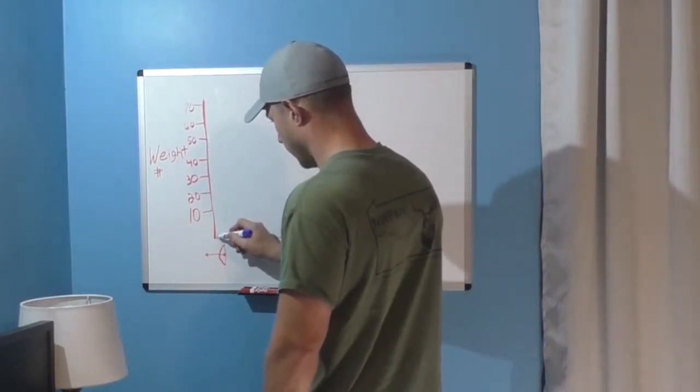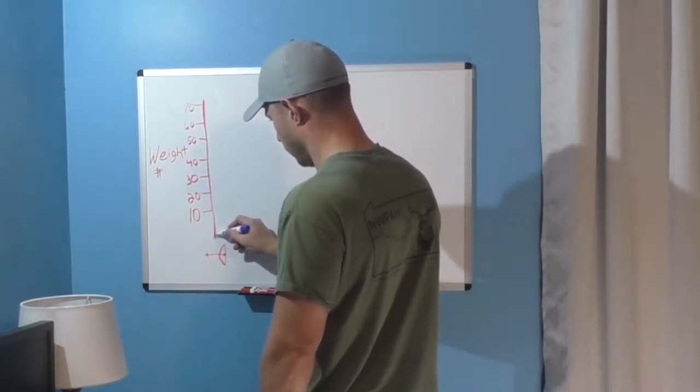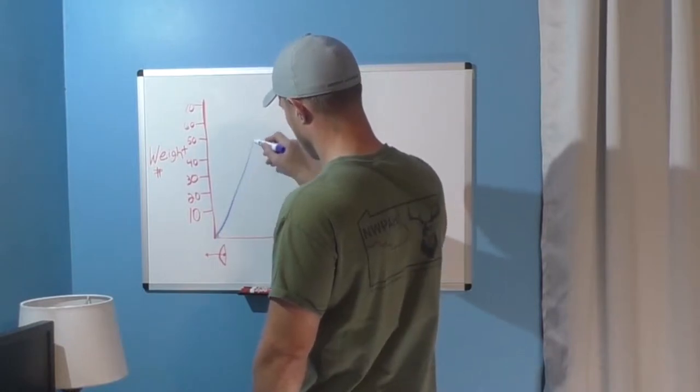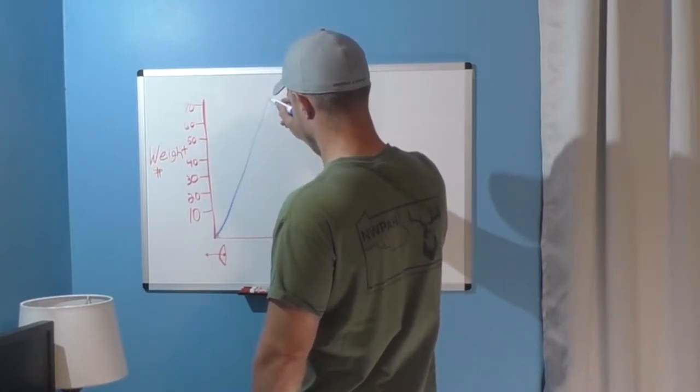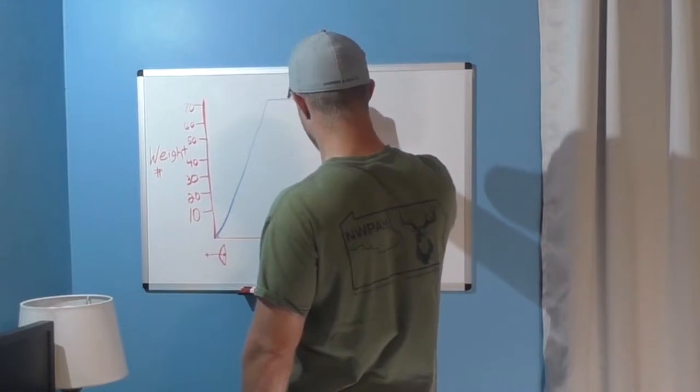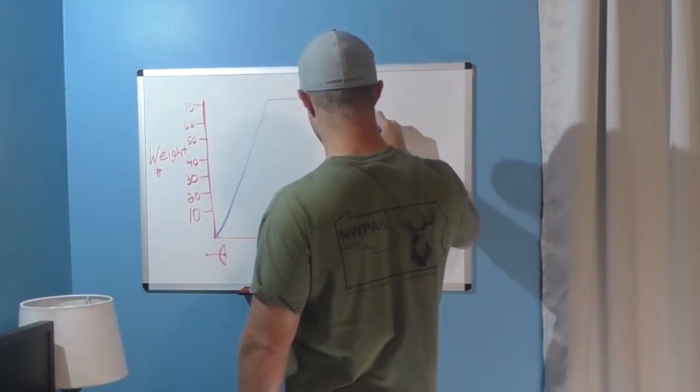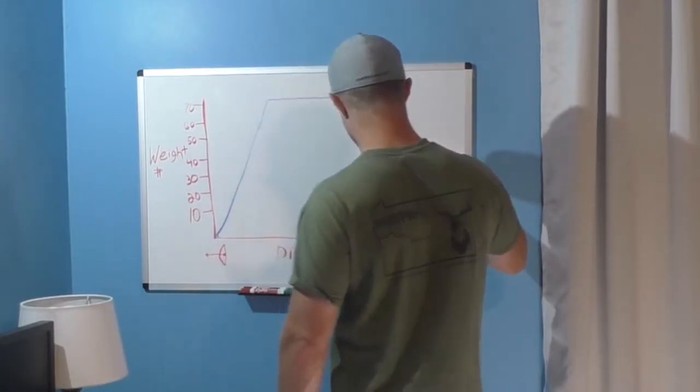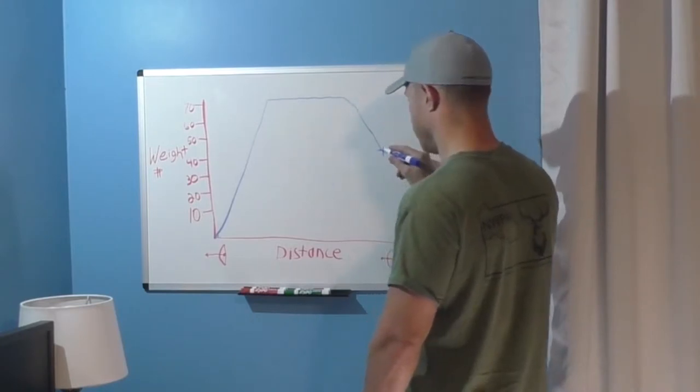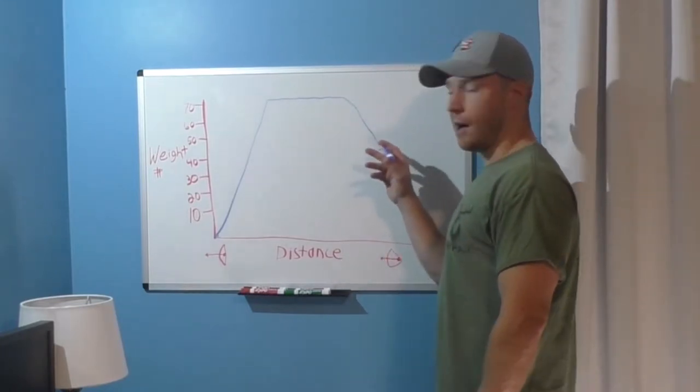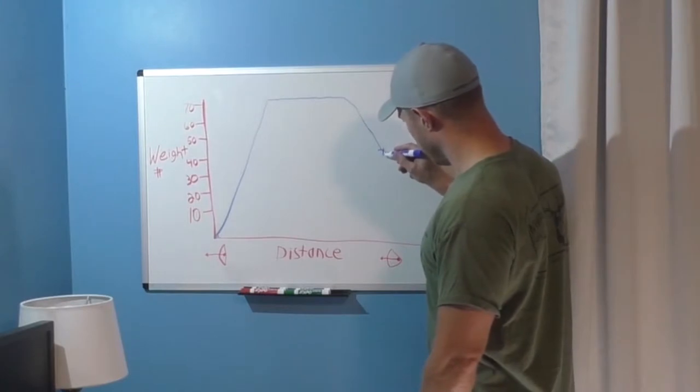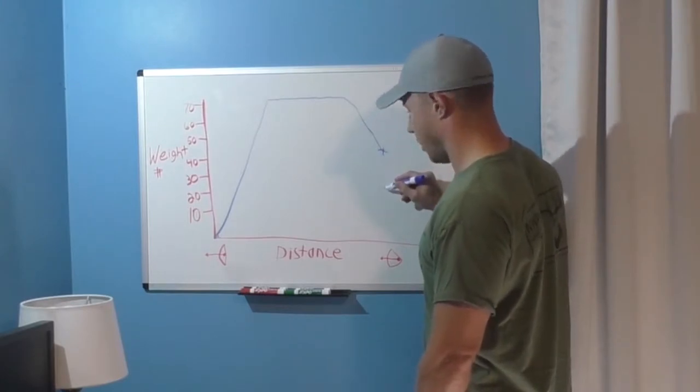So let's actually try to show that on this graph and I can point out what it means. So you'll begin to pull back. It'll draw up. You'll start to feel that resistance. You'll come up to your peak draw weight. You'll level out there and then at some point you'll start to fall off. Now this is your let off. So the higher your let off the lower this point comes down here on your curve.